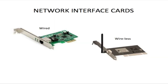These are two examples of Network Interface Cards. On the left, we have a Wired Network Interface Card where an RJ45 cable can be connected. And on the right is a Wireless Network Interface Card where Wi-Fi signals would be transmitted and received through the attached antenna.